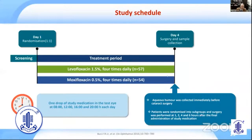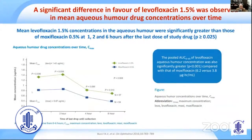A very interesting study from Europe: before cataract surgery, patients were randomized to levofloxacin 1.5 percent four times daily or moxifloxacin 0.5 percent four times daily. At day four, just before surgery, aqueous humor was aspirated and drug concentration measured. There was a significant difference in favor of levofloxacin 1.5 percent in mean aqueous humor drug concentration over time at one, two, four, and six hours.